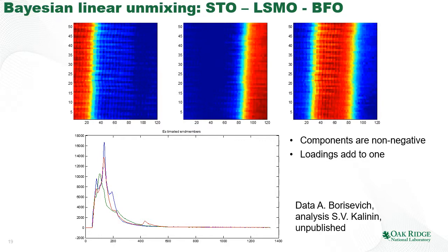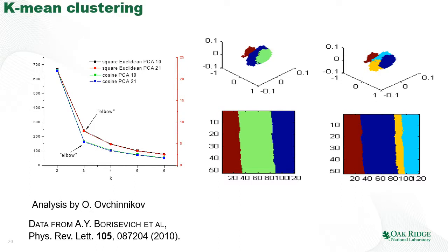The technique that turns out to be extremely useful is Bayesian linear unmixing, where we take the EELS dataset and separate it into components which are non-negative and sum to one. Using this BLU approach, we are able to separate the dataset into components perfectly indicative of pure strontium titanate, LSMO, and BFO, and we can also obtain corresponding end-members representing spectra for the pure phases. We can also try k-means clustering of the same dataset — rather than separating into linear mixing components, we separate into non-overlapping clusters — and it works very well in this case.